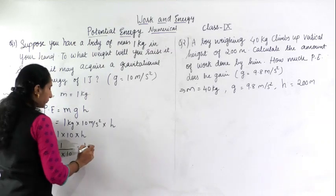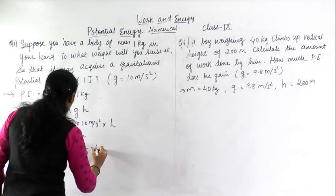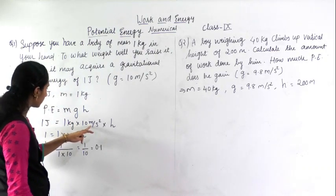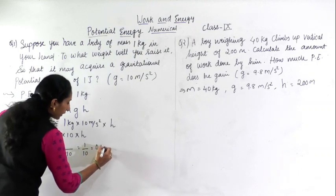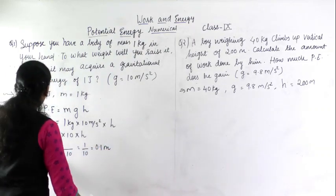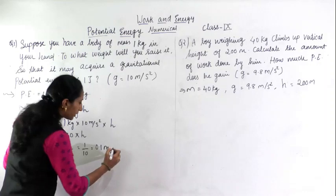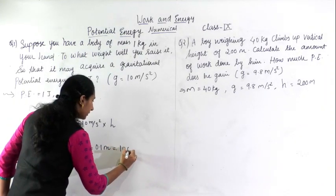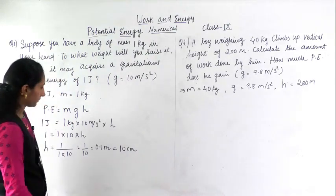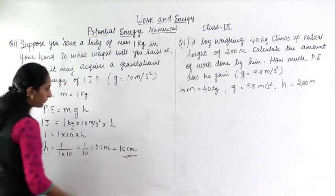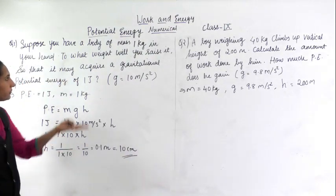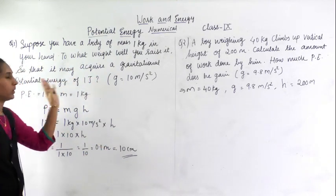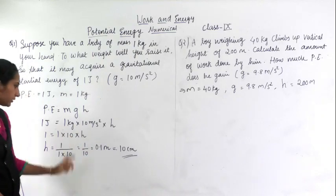You will get 0.1, and now you need to see here it is meters. Your height you are getting in meters. If you want to find it in centimeters, you will get 10 centimeters. This is the answer of the first problem - you have to lift the weight at 10 centimeters, then it will acquire 1 joule. Understood this?